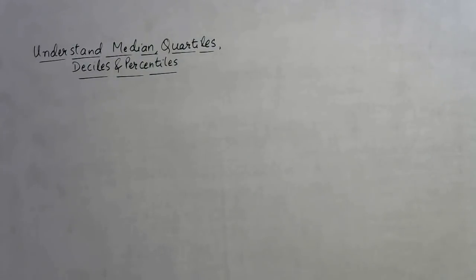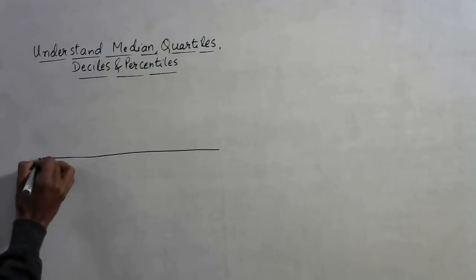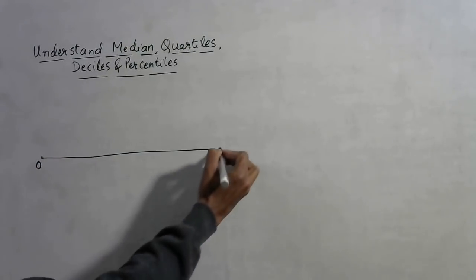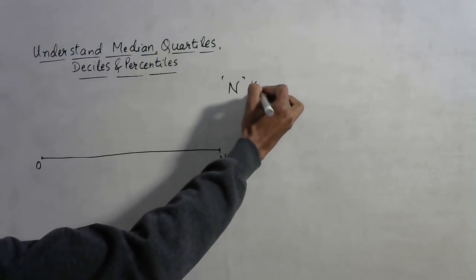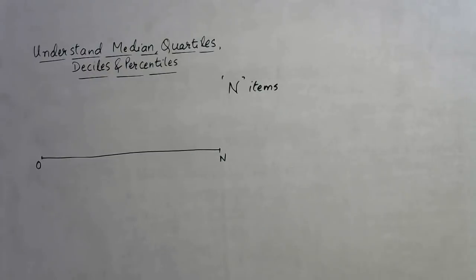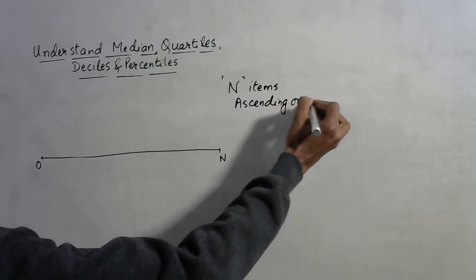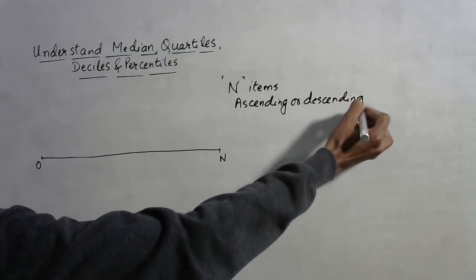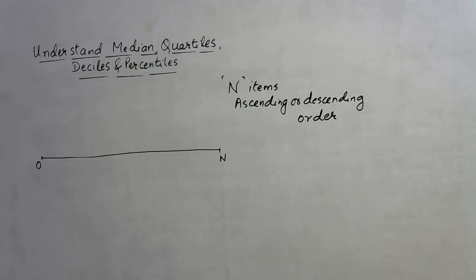Once you are aware of these terms, the application of formula will become very easy. Now let us understand what median, quartile, decile, and percentile are. Suppose this is the data range — this is the zeroth item and this is the nth item, so we have n items in total. We must understand that these items are either arranged in ascending or descending order.